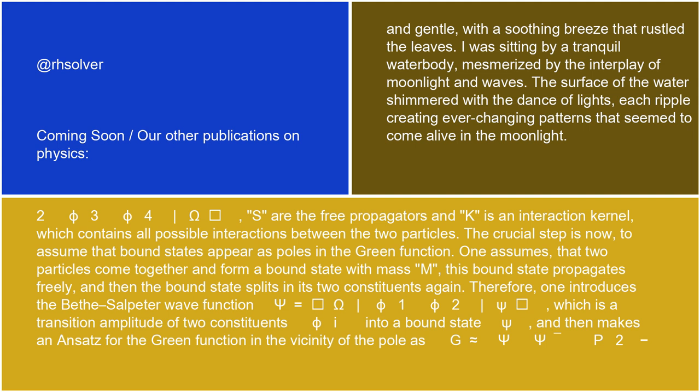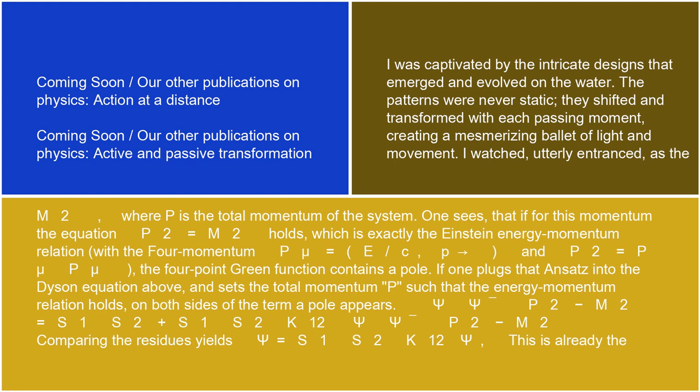The crucial step is now to assume that bound states appear as poles in the Green function. One assumes that two particles come together and form a bound state with mass M. This bound state propagates freely, and then the bound state splits into its two constituents again. Therefore, one introduces the Bethe-Salpeter wave function ψ = ⟨Ω|φ₁φ₂|ψ⟩, which is a transition amplitude of two constituents φ into a bound state ψ, and then makes an ansatz for the Green function in the vicinity of the pole as G ≈ ψψ̄ / (P² − M²), where P is the total momentum of the system.